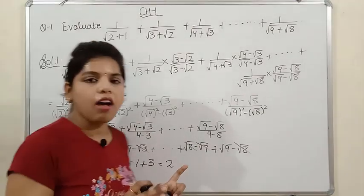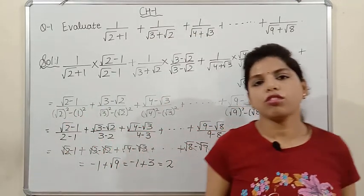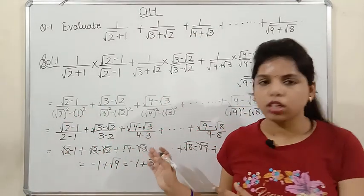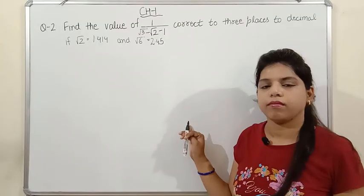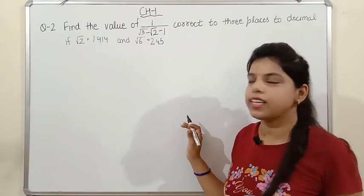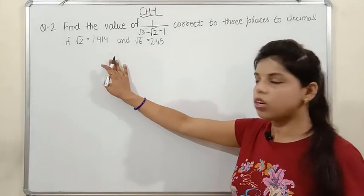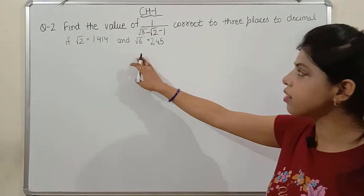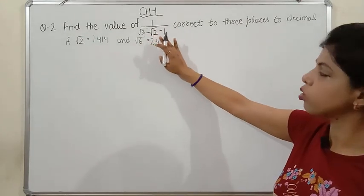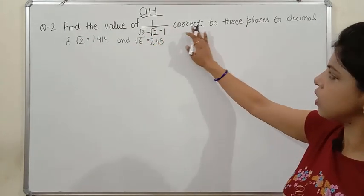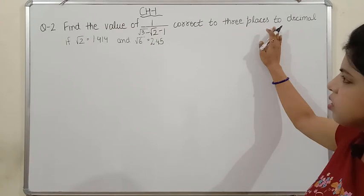So the answer is 2. This type of question is quite important from the examination point of view, so please note it down. Now let's see Question 2: find the value of 1/(√3 - √2 - 1) correct to 3 decimal places, given √2 = 1.414 and √6 = 2.45.